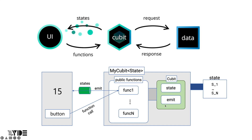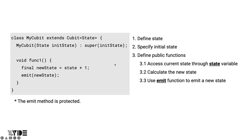The new state value is dispatched to the stream using the emit function provided by Cubit. If you need an additional value to create a new state, you can pass it as an argument to func1. To reorganize the process: first, define the state to be handled in MyQubit. Next, specify the initial state. If you need to provide an initial state value from the outside, you can pass any state through the constructor as shown in the picture on the left.